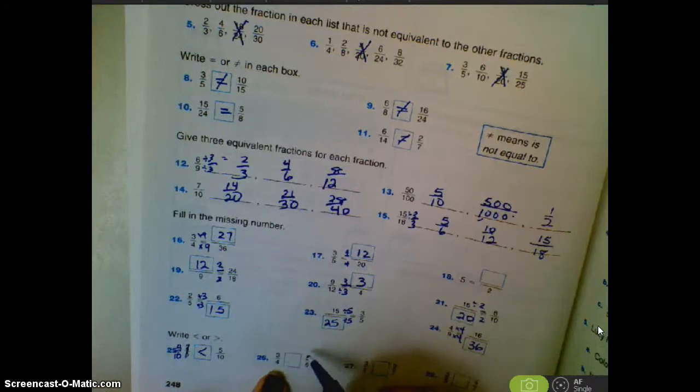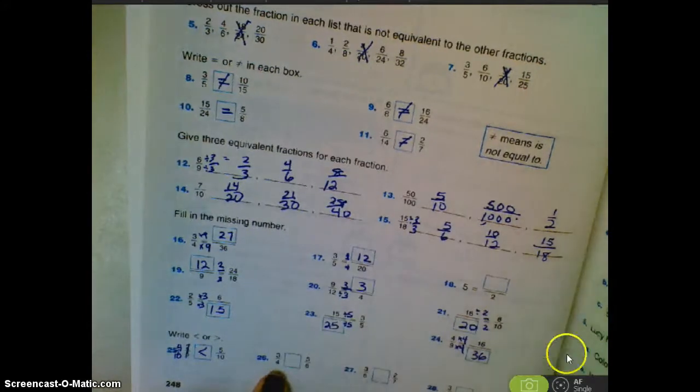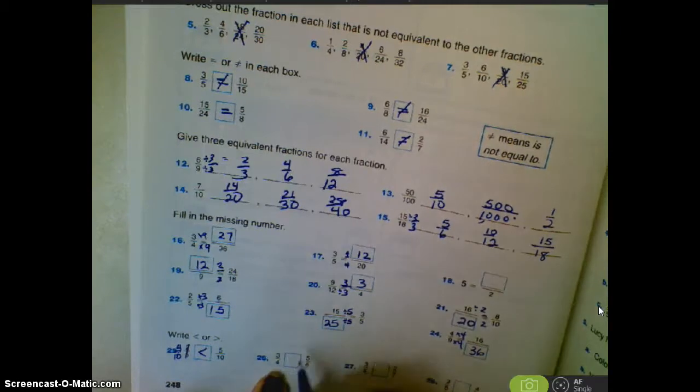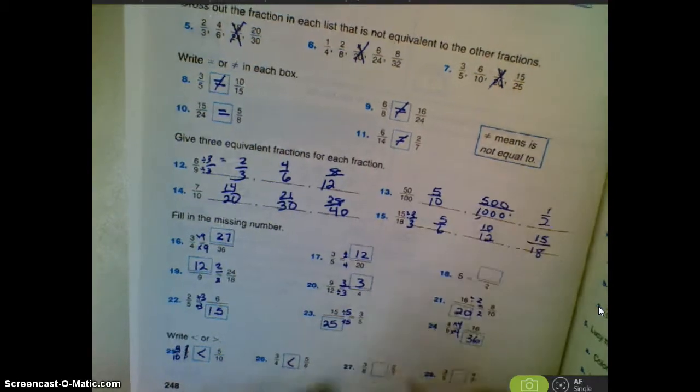This is one of those where they are very close. The numerators and denominators are just one away from each other. Again, think about the pieces that are missing. This one is just missing a very small piece, one-sixth of it, whereas this is missing one-fourth. So five-sixths is larger.